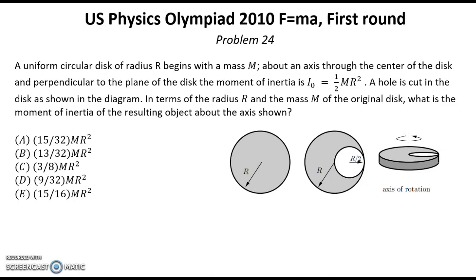A hole is cut in the disk as shown in the diagram. In terms of the radius R and the mass M of the original disk, what is the moment of inertia of the resulting object about the axis shown?